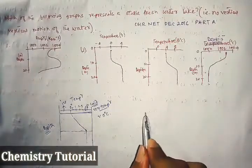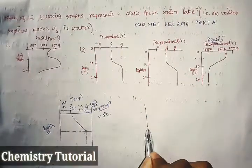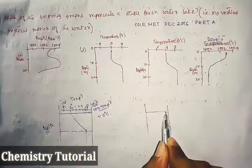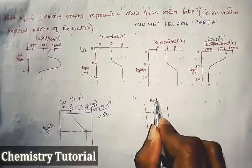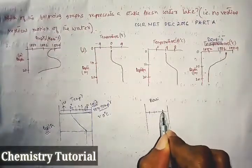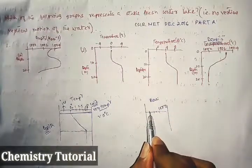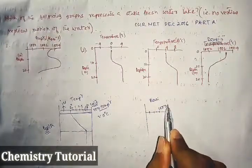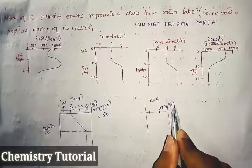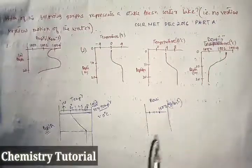Density will be less than 1000 kilograms per meter cube at the surface.